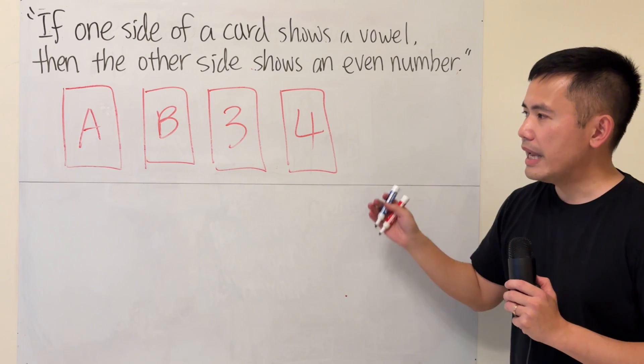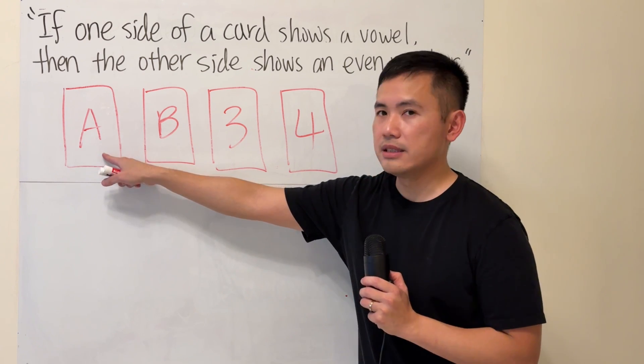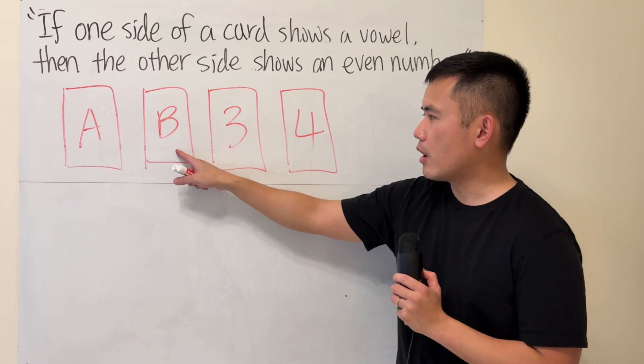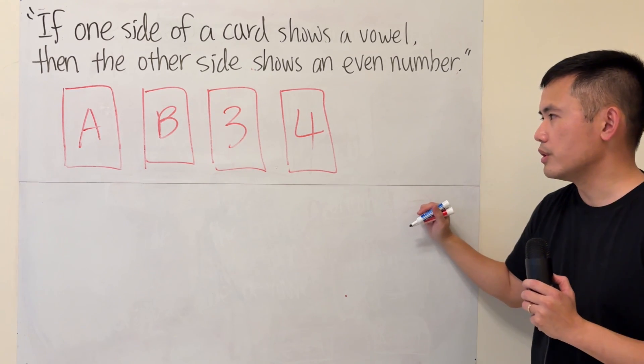Okay, that's the claim. And now here we have these four cards. The first card shows you this side is an A, then the second card shows you the B, then the third card shows you the 3, and then the fourth card shows you the 4.